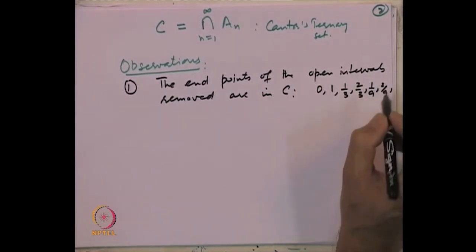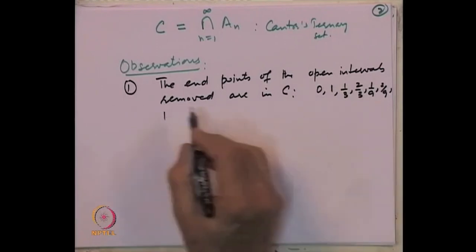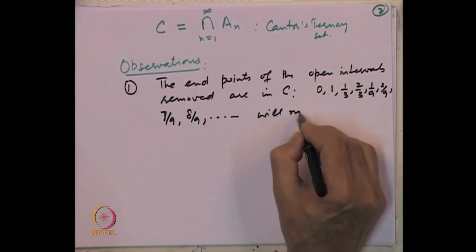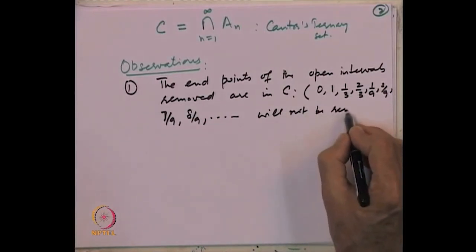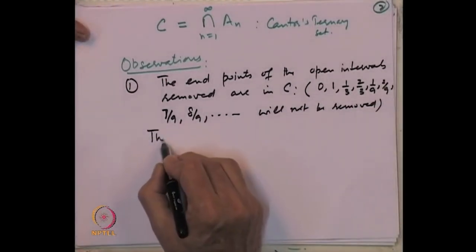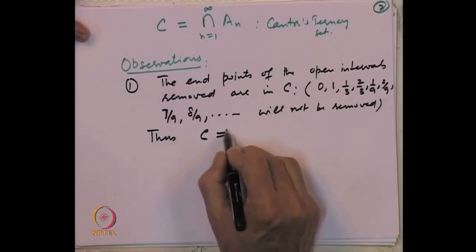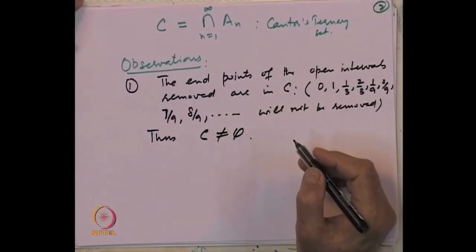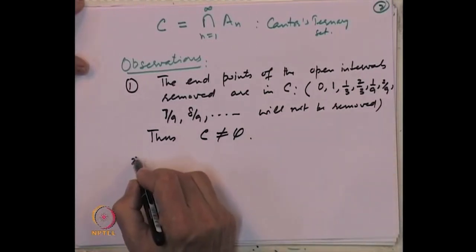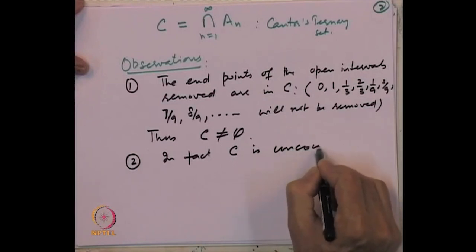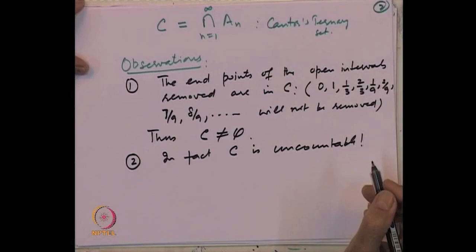Points like 2/9, 1/3, 7/9, 8/9 will not be removed and will stay through this process of removing the middle one-third open interval from each sub-interval at every stage. Thus the set C is non-empty. That is the first observation: something is left behind. The second observation we want to show is that C is in fact uncountable.